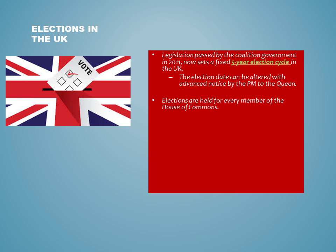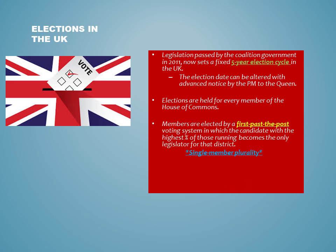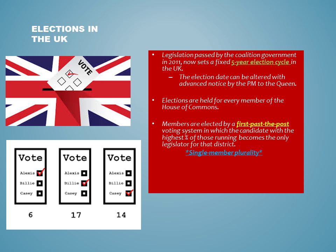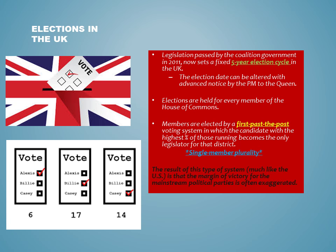Thanks to a 2011 law passed by the Conservative and Liberal Democrat Coalition, elections in the United Kingdom are now on set five-year cycles, though it can be altered in some extreme circumstances. The elections are held for every member who will sit in the House of Commons. The members are elected by what is known as a first-past-the-post voting system, in which the candidate with the highest percentage of votes becomes the only legislator to represent that district. Thus, we say that it is a single-member plurality system, meaning only one member can represent each district, even if that person does not get over 50% of the vote. This type of system oftentimes exaggerates the margin of victory for the mainstream parties that have more national recognition.